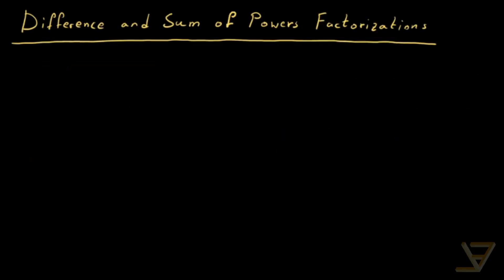Hi, everyone. Let's talk about the difference in sum of powers factorizations. What we're going to be doing is trying to generalize the fact that x squared minus y squared is equal to x minus y times x plus y. This is called the difference of squares factorization.